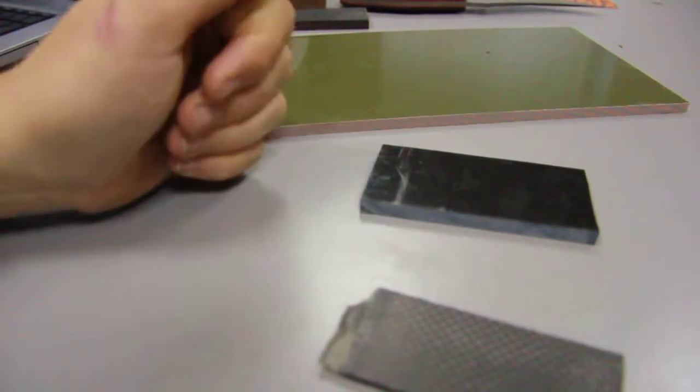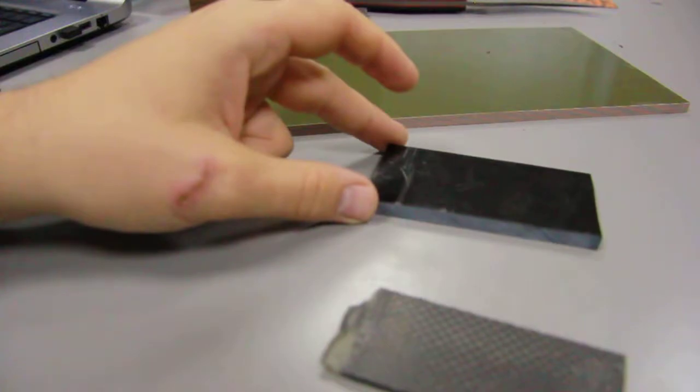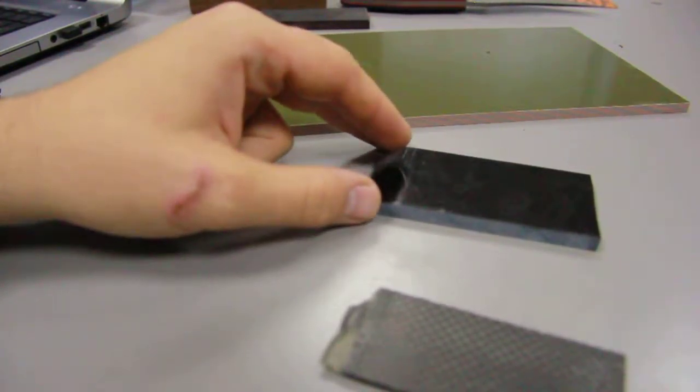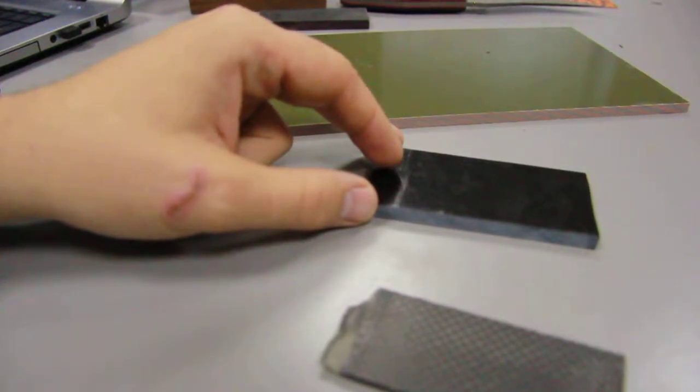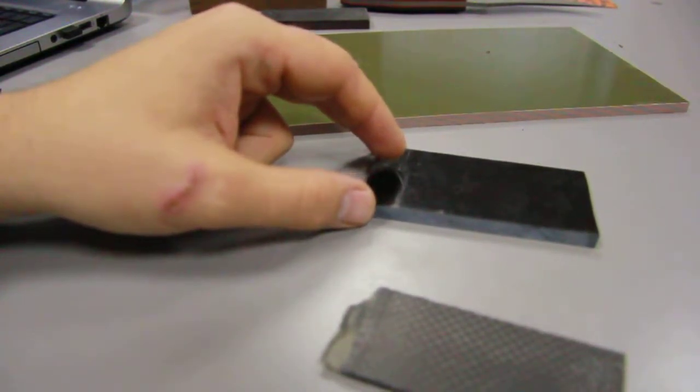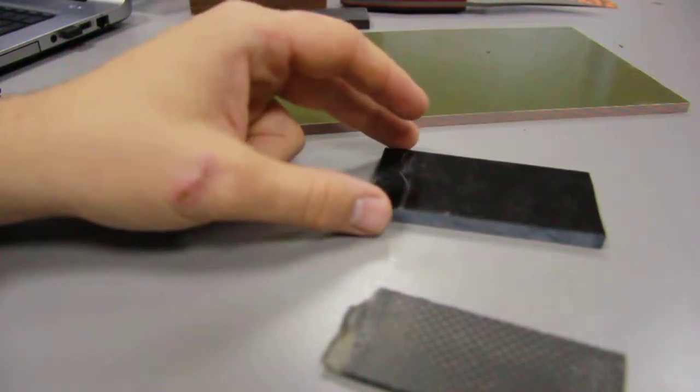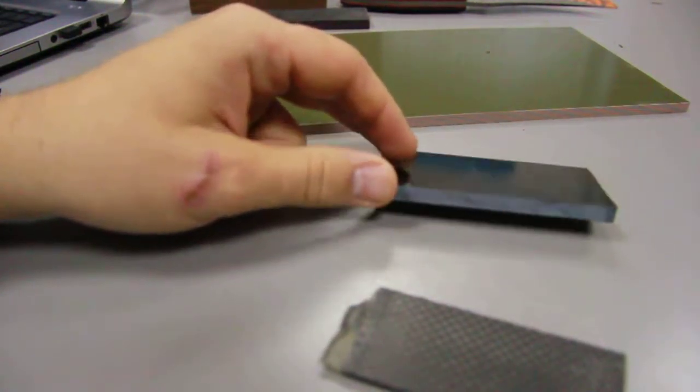G10 is very hard to destroy. Micarta, depending on the resin type, can burn or degrade over time and collect some water, especially if the top layer of the resin is degraded. G10 is much more resistant.